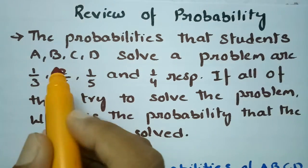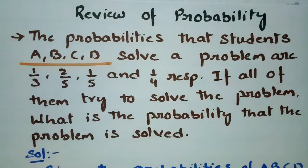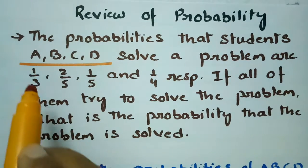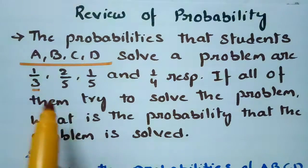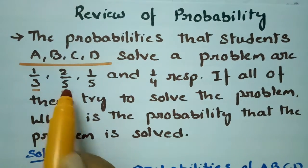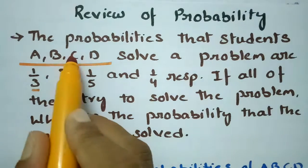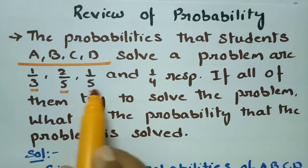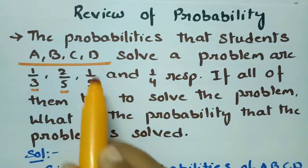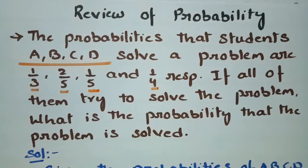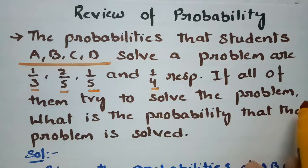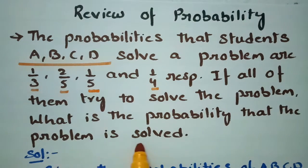There are four students A, B, C, D. The probability of A solving the problem is 1/3, the probability of B solving the problem is 2/5, the probability of C solving the problem is 1/5, and the probability of D solving the problem is 1/4. If all of them try to solve the problem, what is the probability that the problem is solved?